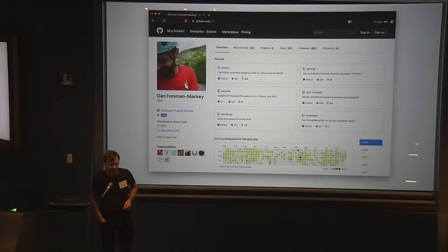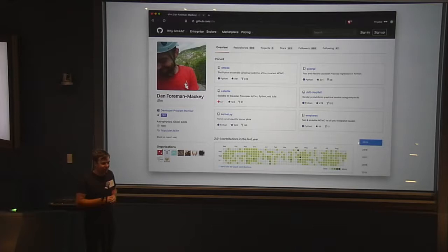I'm Dan Forman-Mackie. I'm an associate research scientist here at CCA. I sit on the fifth floor. I'm glad I get to go first so I can set the bar appropriately low. So I wanted to spend this time to introduce myself and talk about some of the projects that I'm working on and that I'm hoping to collaborate on.